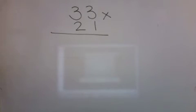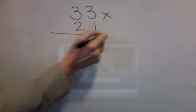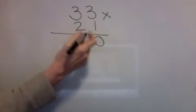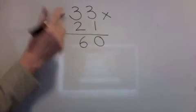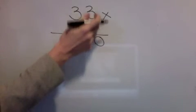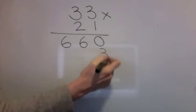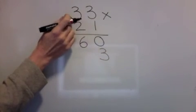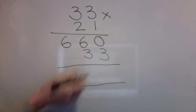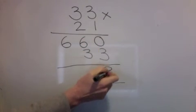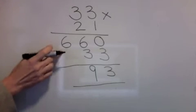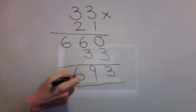Let's see if you got that right. Nought down — start with the tens. Two times three is six. Two times three is six. Over to this side: one times three is three. One times three is three. Add them together: nothing at three is three. Six add three is nine. Six add nothing is six.